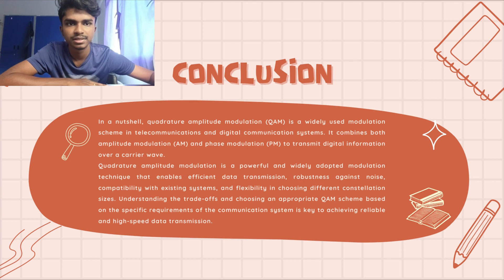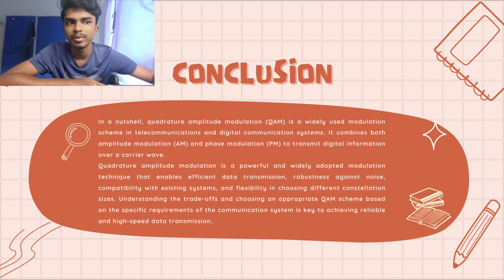Hello, my name is Christy Svarenka-Dresen. My matrix number is B082110256. I'm going to discuss the conclusion. In a nutshell, quadrature amplitude modulation is a widely used modulation scheme in telecommunications and digital communication systems. It combines both amplitude modulation and phase modulation to transmit digital information over a carrier wave. Quadrature amplitude modulation is a powerful and widely adapted modulation technique that enables efficient data transmission.